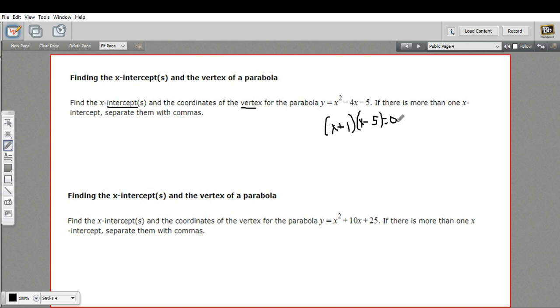And we'll set these equal to 0. And set each individual one equal to 0. And then solve these for x. This one will give us x equals negative 1. And this one will give us x equals 5.